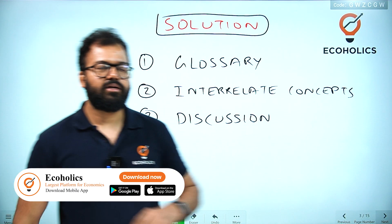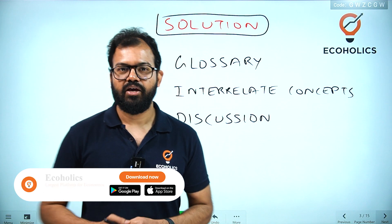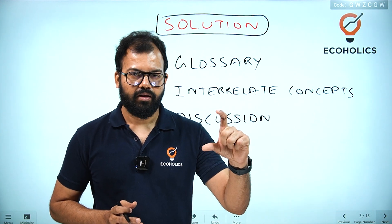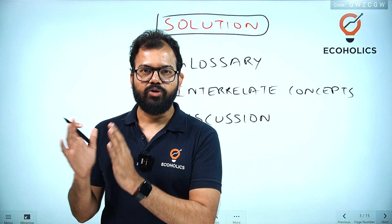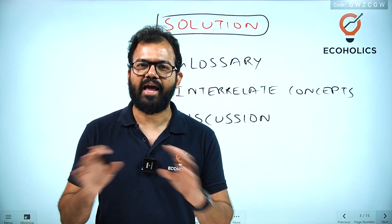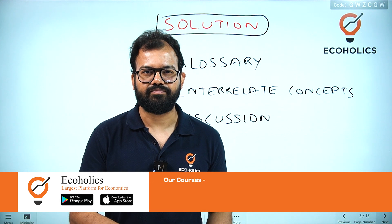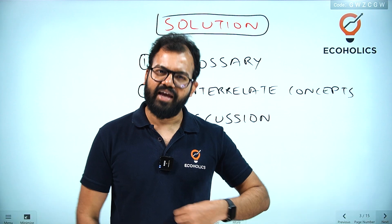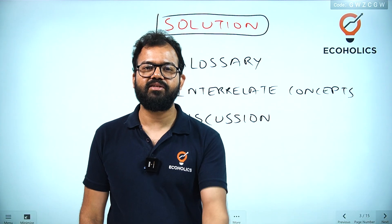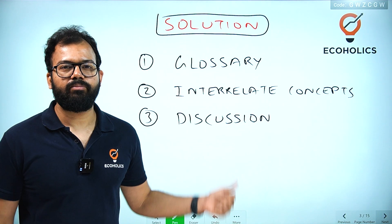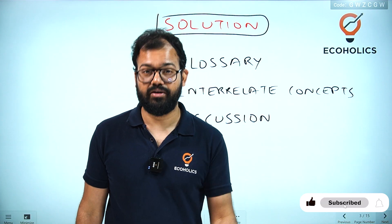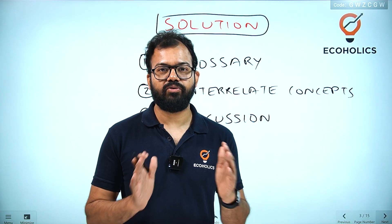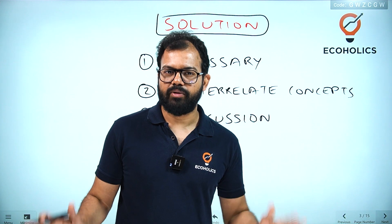Solution point number one is the glossary. There are several resources — books and online — where economics terminology from A to Z is explained in four or five summarized lines. When you are not familiar with a subject, a glossary builds that familiarity, just like referring to a dictionary when learning a new language like English. Whether it is commerce, accountancy, banking, or management, you have to speak the language that the subject demands. You can refer to dictionaries from Penguin and other publishers, as these are authentic and explain each concept in very simple language.